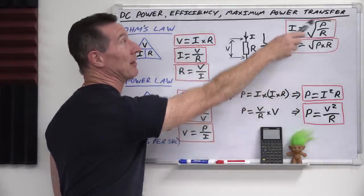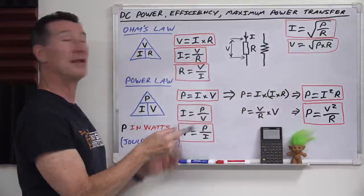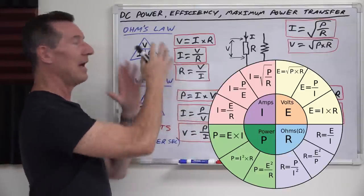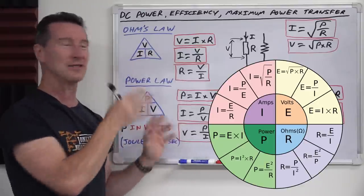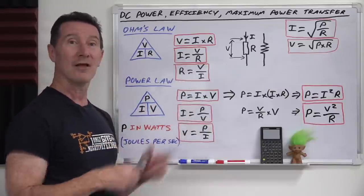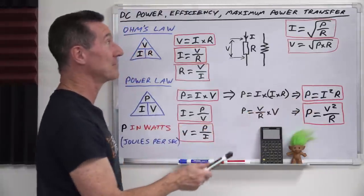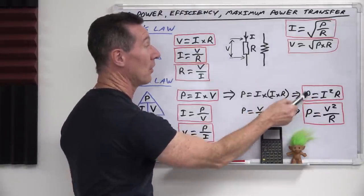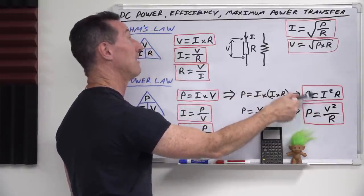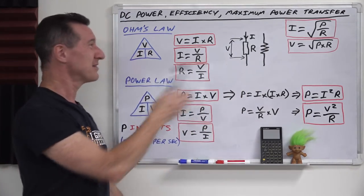For example, current is the square root of P on R, and voltage is equal to the square root of P times R. There's actually what's called an Ohm's Law circle or Ohm's Law pie chart which lists all of these formulas. You don't have to remember them all — once you know the basics, you can derive them when you need them. For example, P equals I²R — if you want to get I out, you take P on R, and then take the square root. That's how you get the equation.